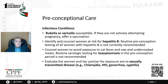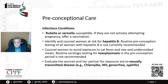Counseling about infectious diseases is also important. We check immunity for rubella and varicella. If our patient is not immune and not actively attempting pregnancy, we should consider vaccination. In countries or places where we have high prevalence of hepatitis B, we should always check antibodies and immunity for hepatitis B. It's very important to counsel women to avoid exposure to cat feces and eating raw uncooked meat. However, routine screening for toxoplasmosis before pregnancy is not recommended. In countries with high incidence of sexually transmitted infections, we should screen for chlamydia, HIV, gonorrhea, and syphilis.